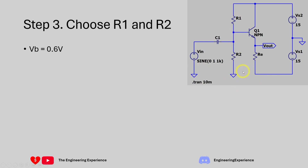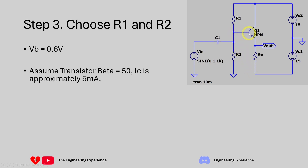VB needs to be set to 0.6 volts. We're going to assume the transistor beta is 50, so the current going into the collector is 50 times the base current. IC is approximately equal to IE — we can ignore IB since it's significantly less than IC. So with 5 milliamps through the collector and emitter, we need 5 milliamps divided by 50, which gives us an IB of 100 microamps.